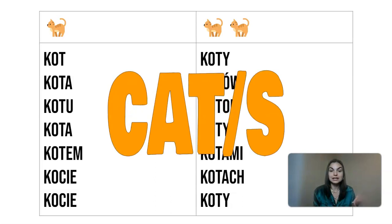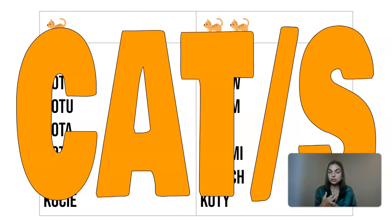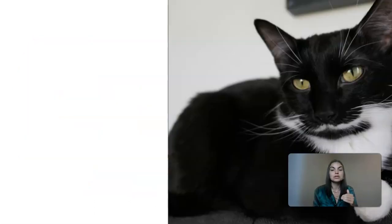And that is exactly what it is — it is either 'cat' or 'cats', but it looks very different. I'm going to go over every one of the cases: what it's called in English, what it's called in Polish, what question it answers, and how it may appear in a sentence. So let's start with the very first one.